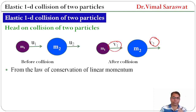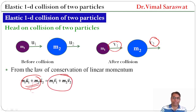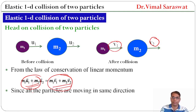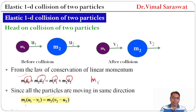From the law of conservation of linear momentum, the total linear momentum before collision and total linear momentum after collision remains the same. So M1·U1 + M2·U2 = M1·V1 + M2·V2. This is the total linear momentum before collision and this is the total linear momentum after collision. Since all the particles are moving in the same direction, we can remove the vector signs. So M1·U1 + M2·U2 = M1·V1 + M2·V2.